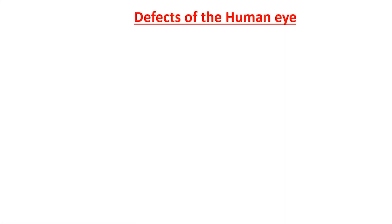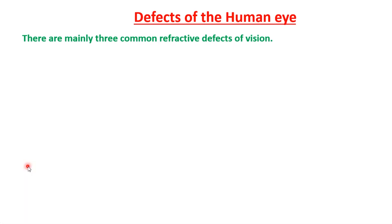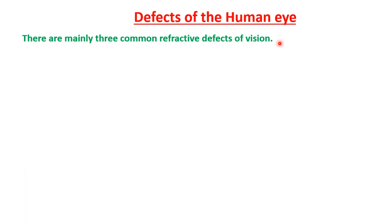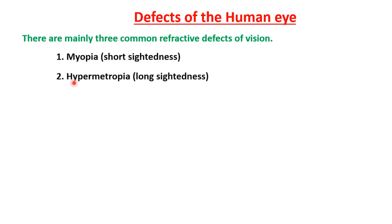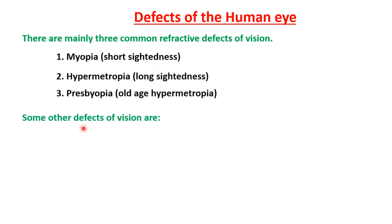There are mainly three common refractive defects of vision. First is myopia, which is also called short-sightedness. Second is hypermetropia, which is also called long-sightedness. Third is presbyopia, which is also called old-age hypermetropia. There are many more defects like astigmatism and cataract, which we will also study in today's class.